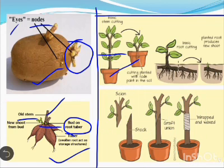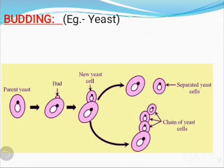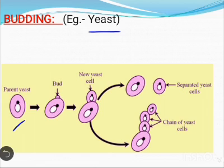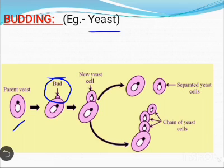Now come to the second mode of asexual reproduction, which is budding. Yeast is an organism that contains a single cell. Yeast is a fungus, not a plant. It can propagate every few hours if the proper amount of nutrients are available to it. As the yeast finds favorable conditions, a small bulb-like projection is produced from the yeast parent cell. These bulb-like projections are known as buds.